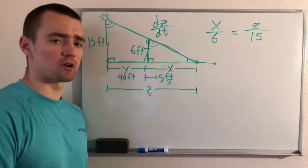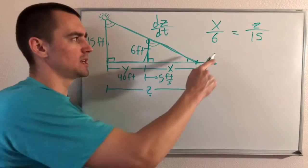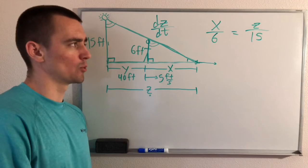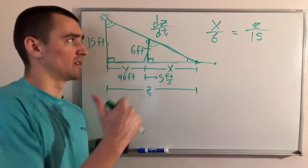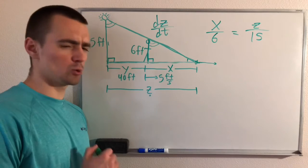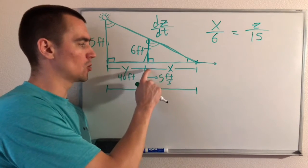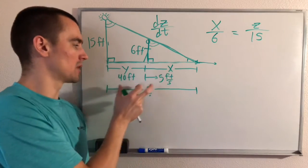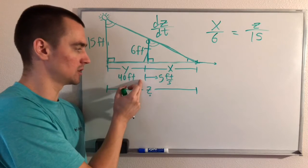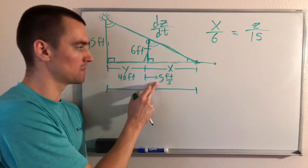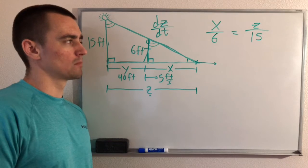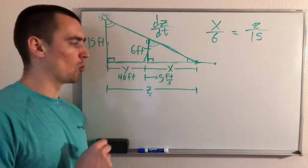We need to express dz/dt in terms of things we know. If we use X in our equation, after differentiating we'll have a dx/dt, and we don't have information about that. What we do have is Y and dy/dt — Y is the distance from the pole to the man, and dy/dt is 5 feet per second, the man's walking speed. So it's better to express the equation in terms of Y instead of X.